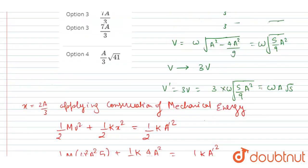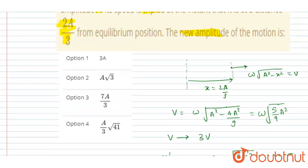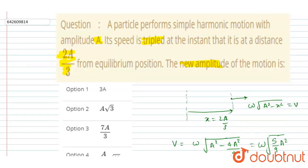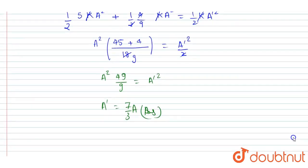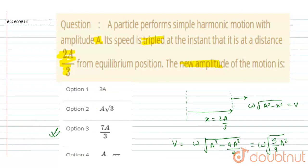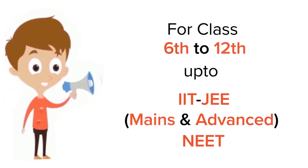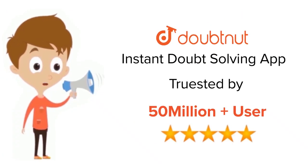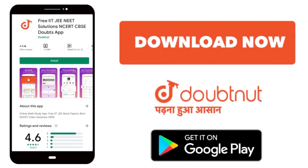You can see the question again — we wanted the new amplitude if the velocity is tripled at a distance of 2A/3 from the equilibrium position, and we got the amplitude 7A/3 as the answer. For class 6 to 12th, IIT-JEE and NEET level, trusted by more than 5 crore students — download the DoubtNut app today.